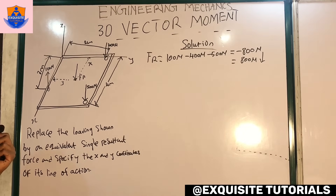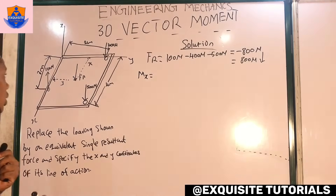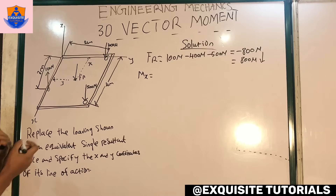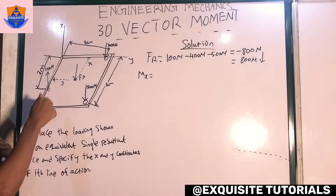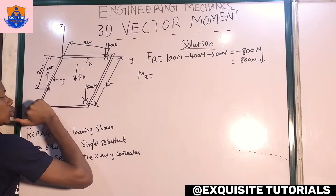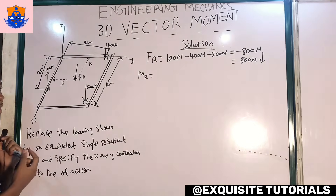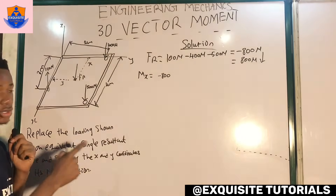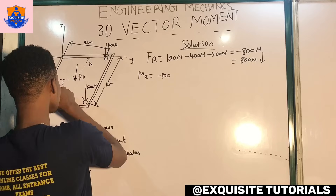Taking moments about the x-axis: the resultant force of 800 newtons is going into the plane. By the right-hand rule, this produces a negative moment, so we have minus 800 times y. Note the negative sign comes from the direction of the moment, not from the sign of the force itself. This equals the sum of moments from the other forces.